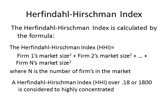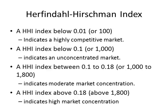If the decimal fraction is used, then an HHI over 0.18 is considered to be highly concentrated. If a percentage is used, an HHI over 1,800 is considered to be highly concentrated. An HHI below 0.01, or if the percentage is used, below 100, then the market is considered to be highly competitive. An HHI below 0.10, or 1,000 if a percentage is used, then the market is considered to be unconcentrated.